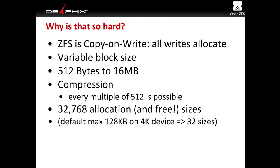Even in the best case, where you're using the default max of 128K and 4K sector size, there are still 32 different sizes. That means if you allocate a bunch of 4K chunks and then free some of them, and then want to allocate a 128K chunk, we need to find 32 contiguous free slots in order to satisfy that.